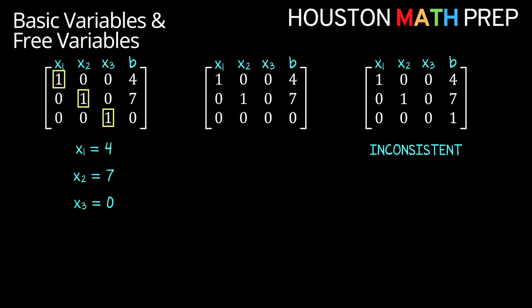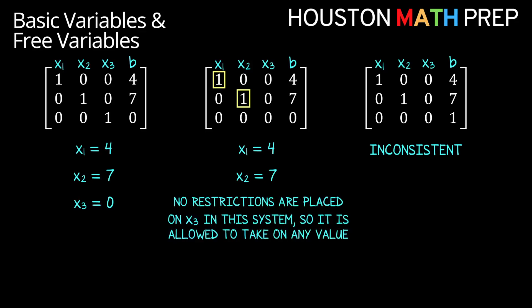In our first matrix, we have exactly one solution where x1 is 4, x2 is 7, and x3 is 0. In our middle matrix, we still have x1 is 4 and x2 is 7, but the last row doesn't give us any conditions about what x3 must be. Since this last row places no restrictions on x3, it can be any real number and the system of equations will be satisfied — this is what we refer to as a free variable.